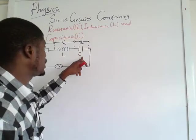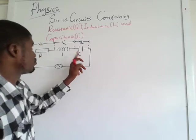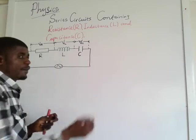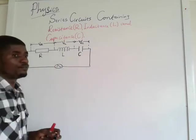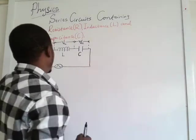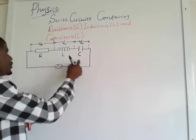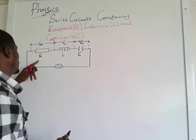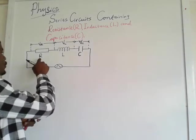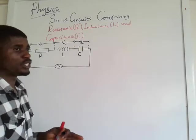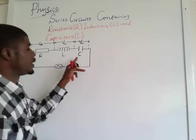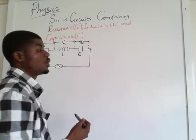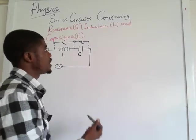Likewise, in a circuit containing only a capacitor, the current leads the voltage. And in a circuit containing only an inductor, the voltage leads. Now here, in the circuit that contains R, L, and C, the same current will flow through the entire circuit. The current will be in phase with the voltage across the resistor, and out of phase with the voltage across the inductor and capacitor. So let's draw our phasor diagram to deduce the equations we are going to use in today's video.